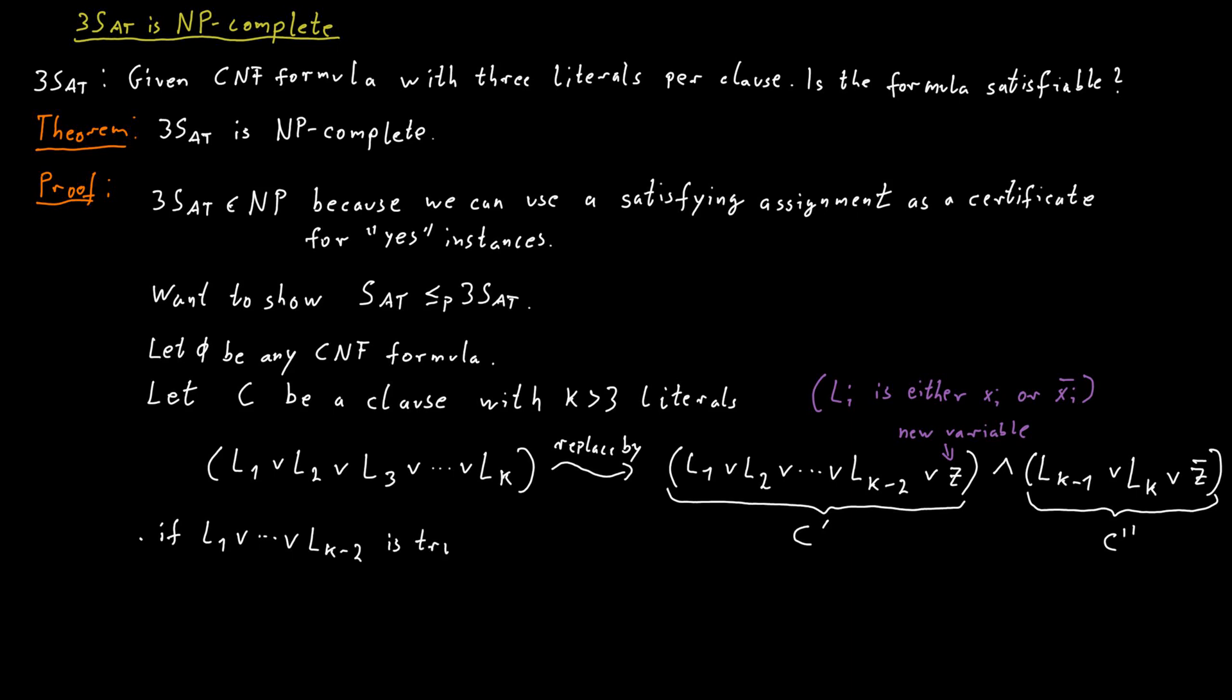In that case, our new clause C' would be satisfied already with this assignment. And we could also satisfy the new clause C'' because we could just set the variable z to false. So if we had a satisfying assignment like this before, we have one in our new formula as well.